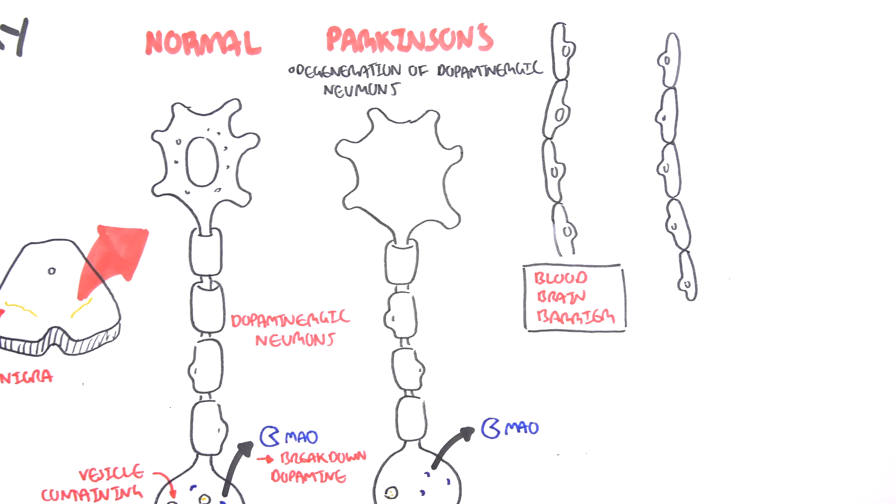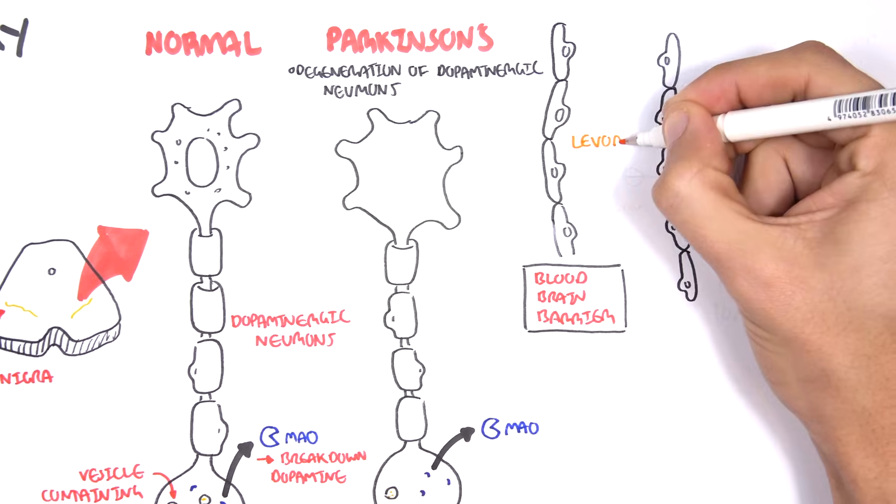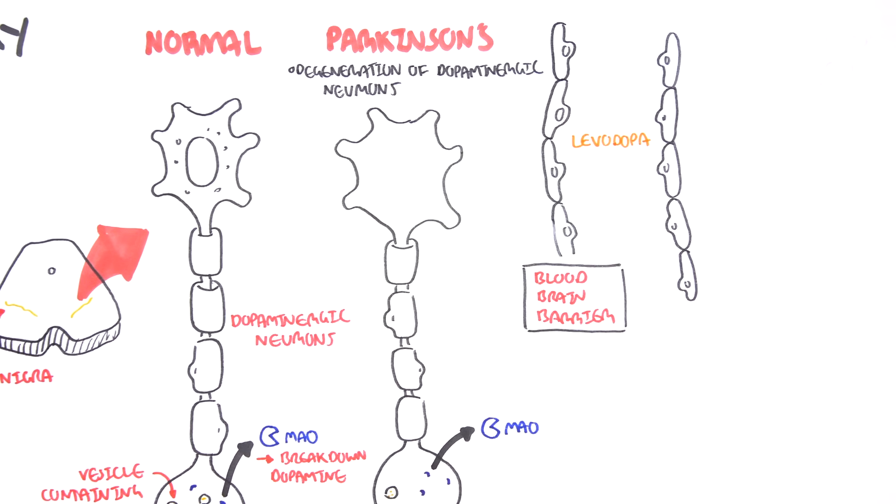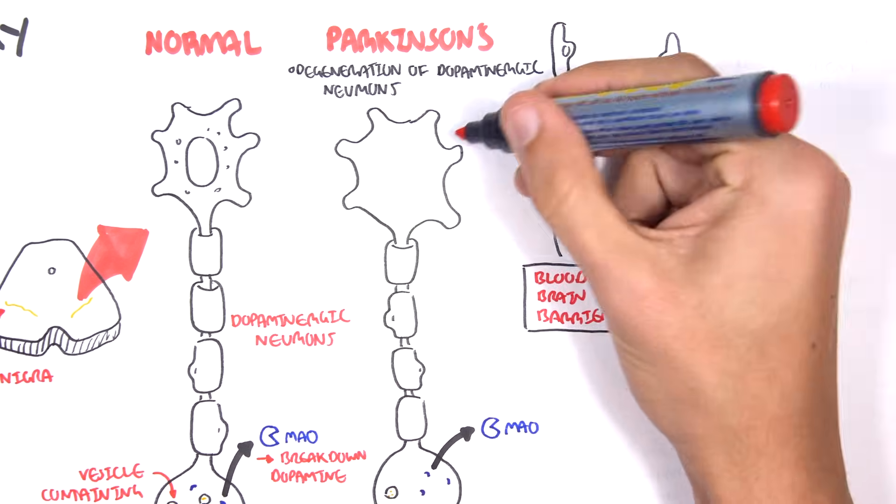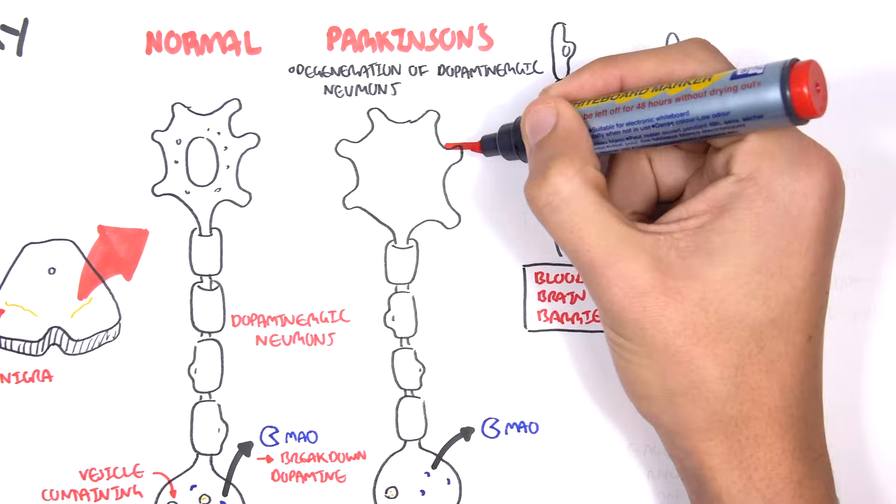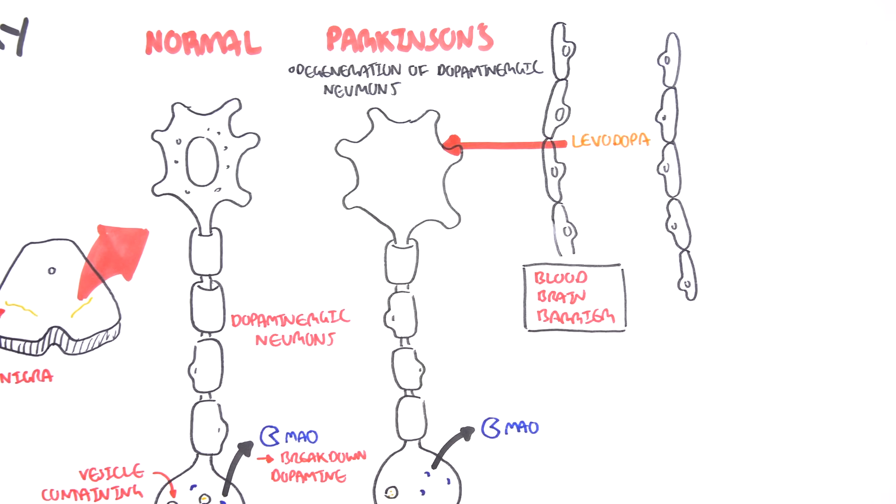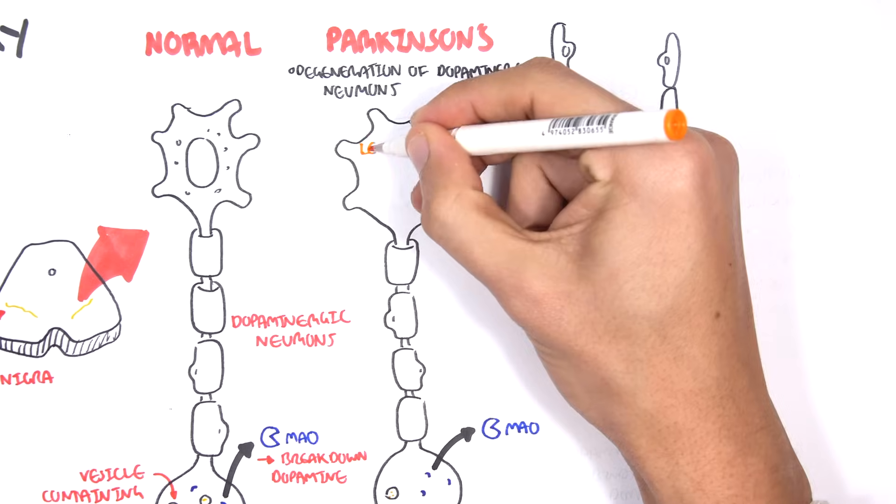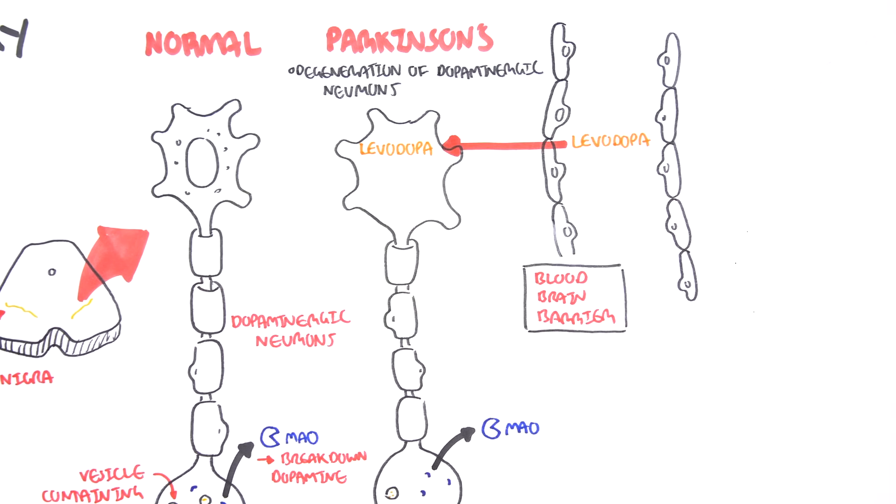Essentially, the treatment for Parkinson's disease is to provide more dopamine. That is one logical reason. So a drug that could be given is known as levodopa.